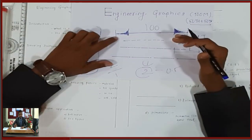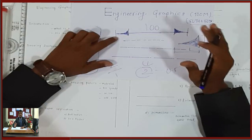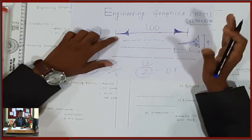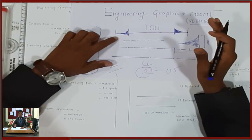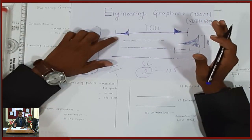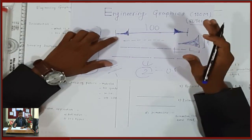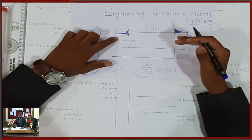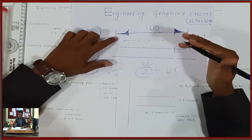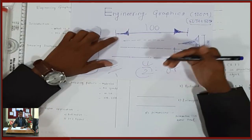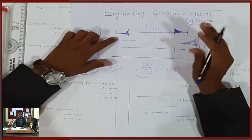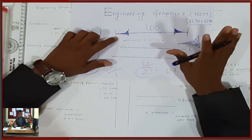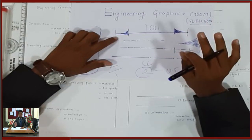The minimum dimension line gap from the object is 10 mm. The dimension line should be placed at an appropriate distance from the object outline.